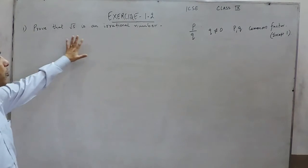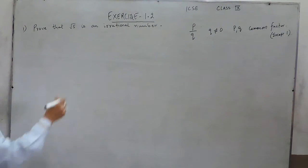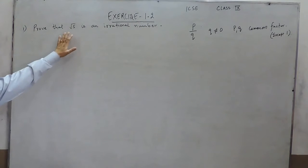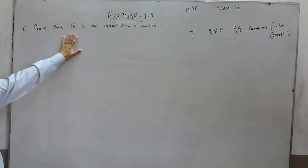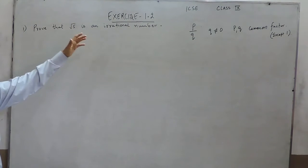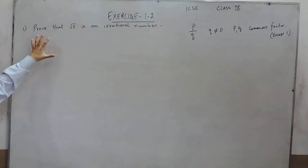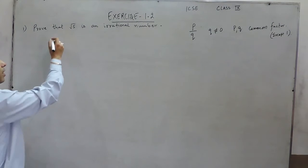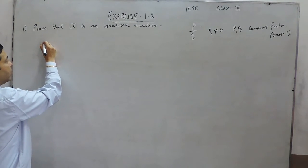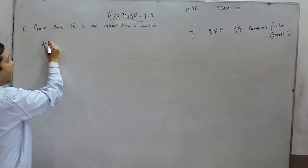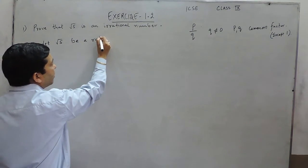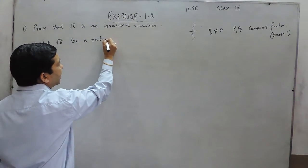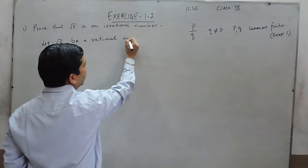Now, when we have to prove that root 5 is an irrational number, there can also be questions where we have to prove under root 3, under root 2, under root 6, under root 7 — all of them as irrational numbers. That question can come in your exam. So first of all, we assume: let under root 5 be a rational number. We are assuming that this is a rational number.